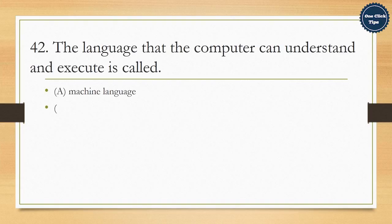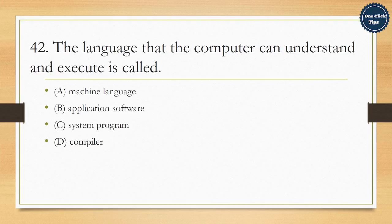42. The language that the computer can understand and execute is called A. Machine language, B. Application software, C. System program, D. Compiler. The correct answer is A. Machine language.